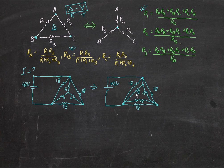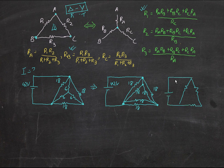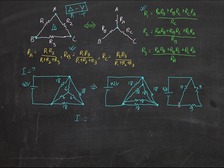Since all resistors are equal, we get 18 here, 18 here, and 18 here. Now it's easy — you can do parallel for these two, parallel for these two, and parallel for these two, giving one whole total Delta. Since the parallel of two equal resistors gives half the value, half of 18 is 9. So we get 9, 9, and 9. The supply is 42 volts. Two of the 9-ohm resistors are in series, giving 18, and that 18 is in parallel with the remaining 9.